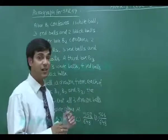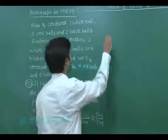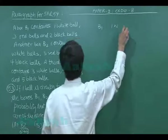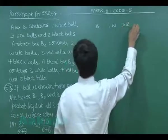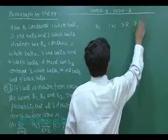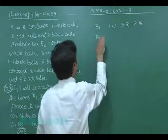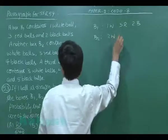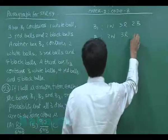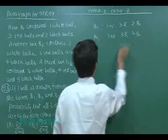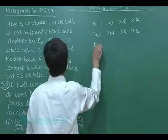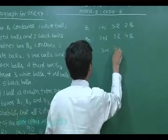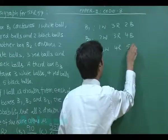Let us write the configuration first that the balls are in different boxes. B1, box B1 has 1 white, 3 red and 2 black balls. Box B2 contains 2 white, 3 red and 4 black balls. Box B3 contains 3 white, 4 red and 5 black balls.